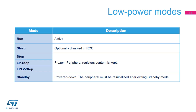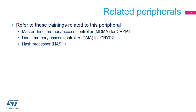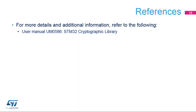Here is an overview of the status of the cryptographic processor in each of the low power modes. Cryptographic operations are not possible when the device is in stop and standby modes. This is a list of peripherals related to the cryptographic processor. Refer to the DMA training for more information about the cryptographic channel configuration, and please refer to the hash training if you want to know more about cryptographic engines. For more details, please refer to these documents available on our website. Thank you.